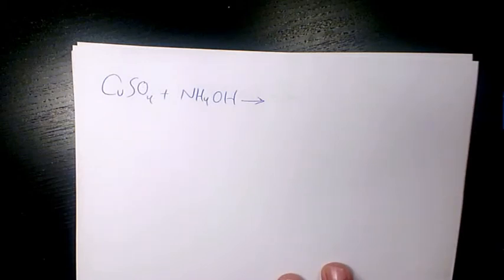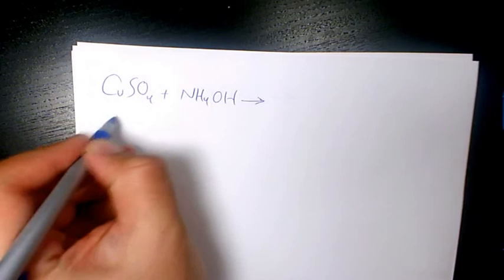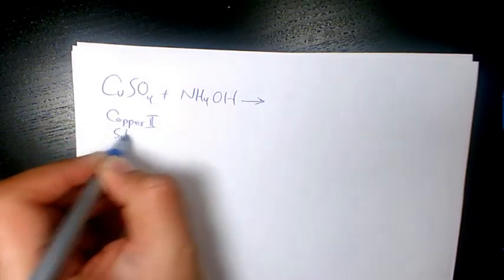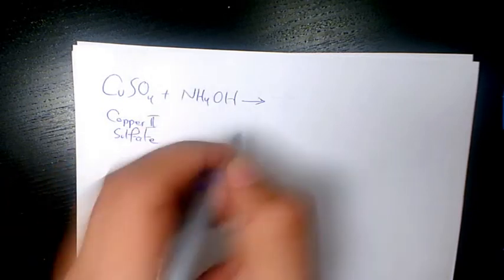What's up guys, this is Massey. Welcome to another video. In this video I want to show you the reaction between CuSO4 and NH4OH. So CuSO4 is copper 2 sulfate and NH4OH is ammonium hydroxide.